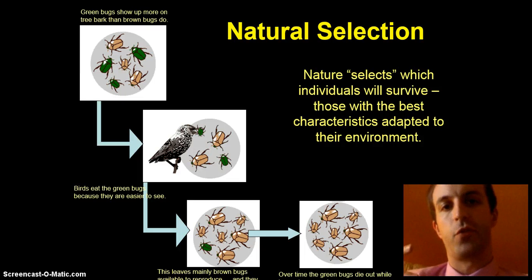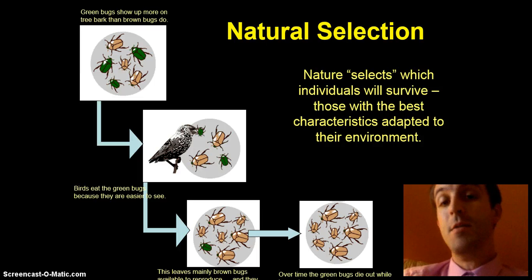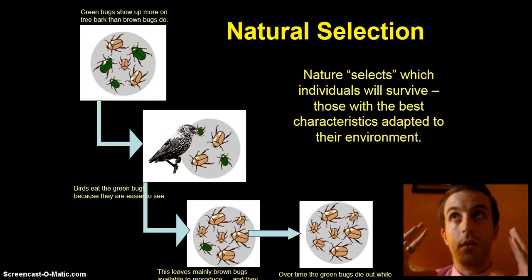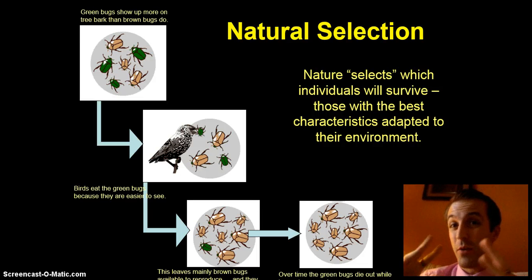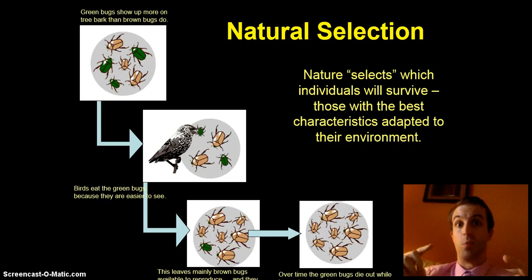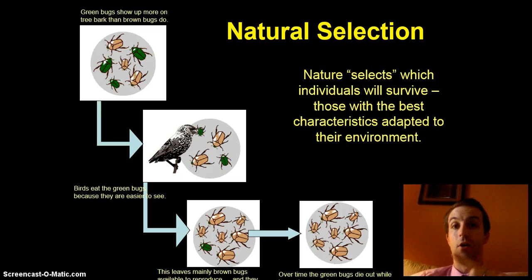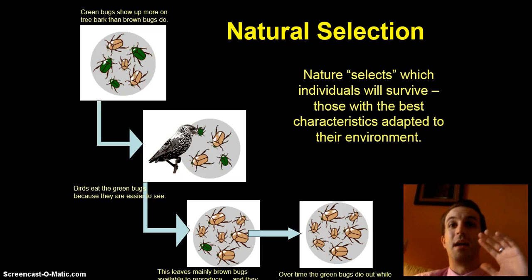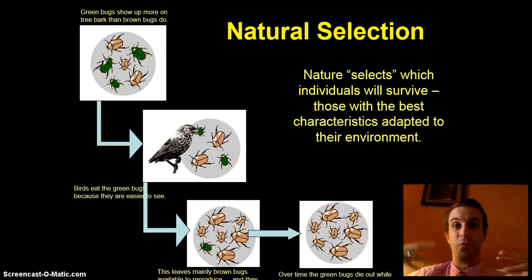Those with beneficial traits to their ecosystem are the ones that survive. But that word — beneficial traits — is really subjective. It's unique to each ecosystem. What will help you out a whole lot in the Arctic might kill you in the desert, so what is beneficial is really situational and dependent on your ecosystem.